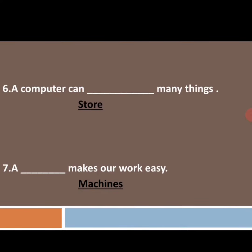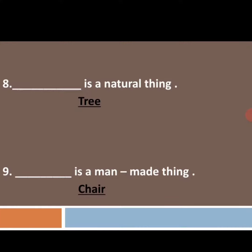Next, the sixth one: a computer can ___ many things. A computer can store many things — make the tick mark for store. Seventh one: a ___ makes our work easy. A machine makes our work easy — make the tick mark for machine. Next, ___ is a natural thing. A tree is a natural thing — make the tick mark for tree.